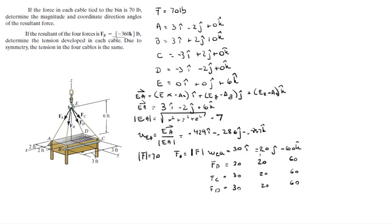Looking at the signs: F_A is positive, negative, negative. F_B is positive, positive, negative. F_C is negative, positive, negative. F_D is positive, positive, negative — wait, positive positive for the x and y. All four forces always contribute a negative 60 in z because each cable pulls downward, so z is always −60.